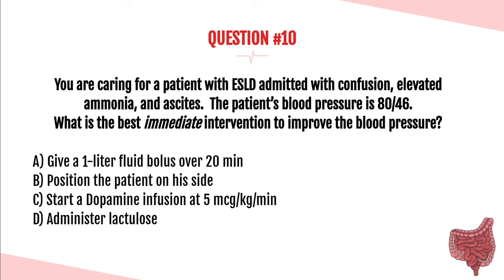The answer is B — position the patient on his side. You don't want to give fluid because they will third-space it due to low albumin levels, and the ascites is pushing up on the IVC. Positioning the patient on their side immediately relieves pressure on the IVC. Lactulose would be a good idea, but it is not the immediate intervention for a hypotensive patient.